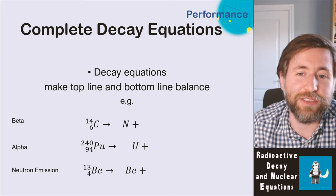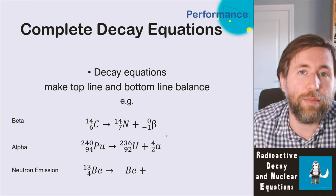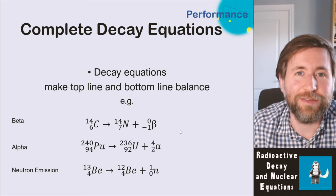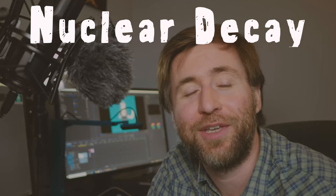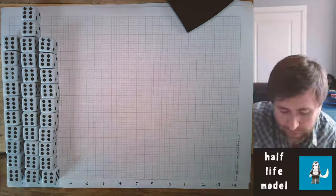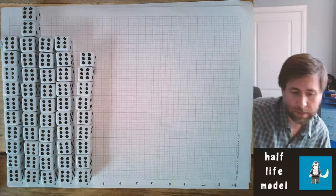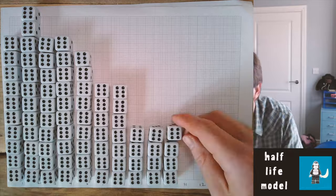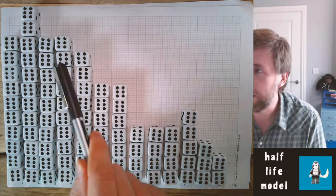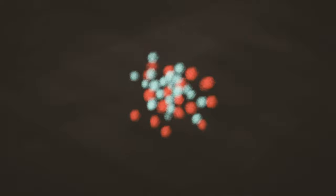The key with nuclear decay equations is making sure the top line and the bottom line balance. All you need to do is memorize your codes and balance both lines. A key point about radioactive decay is that it's random — we can never predict when an individual radioactive nucleus will decay. It only depends on the nucleus and cannot be influenced by external factors. We'll use this idea of randomness in the next video when we explain the term half-life, which describes how long something will stay radioactive.